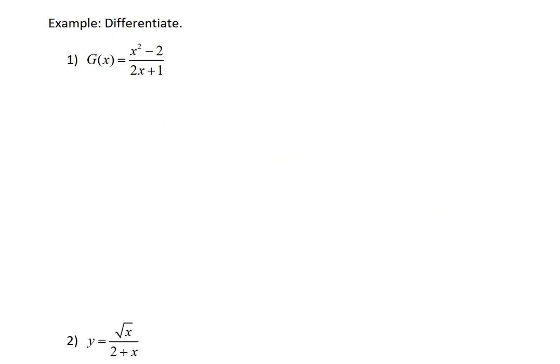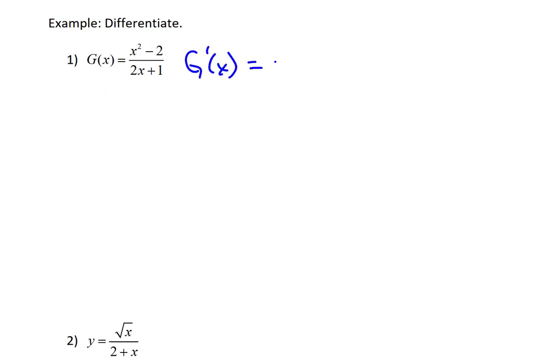Let's try an example where we want to differentiate the following function: g of x equals a rational function where the numerator is x squared minus 2 and the denominator is 2x plus 1. Given the rules we've already discussed for derivatives, this does not conveniently fit into a previously known form or rule, so this is a good opportunity to practice the quotient rule. We have a quotient with a numerator and denominator that can be split into separate functions.